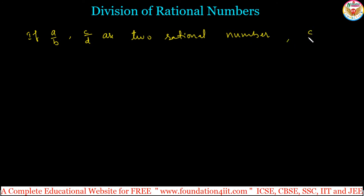And here c/d, the second rational number, is not equal to zero. That is the rule. a/b and c/d are two rational numbers and the second one, c/d, is non-zero. Then if you want to divide this.